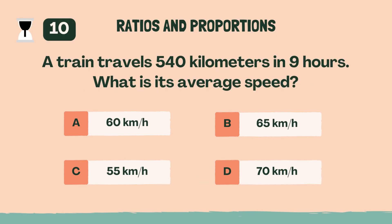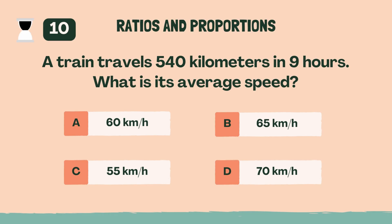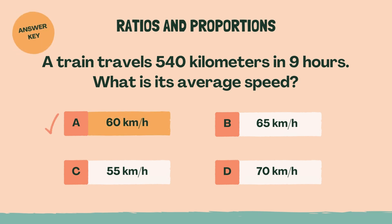A train travels 540 kilometers in 9 hours. What is its average speed? A, 60 kilometers per hour.